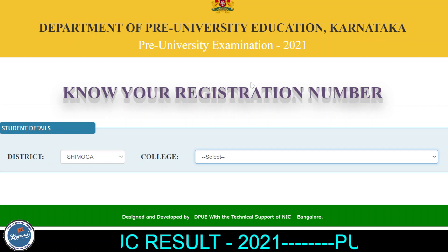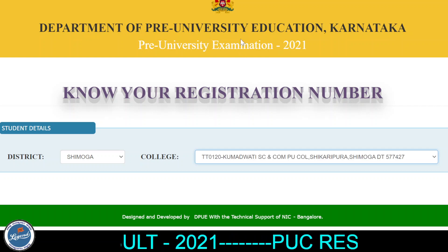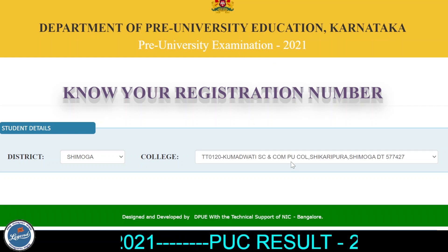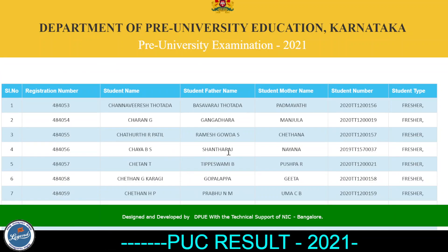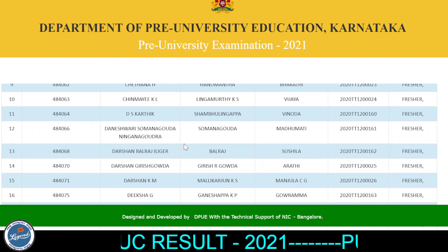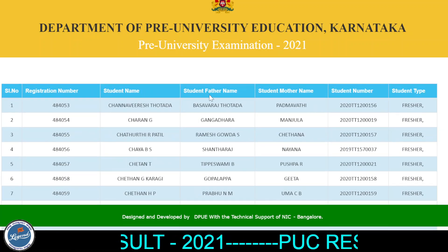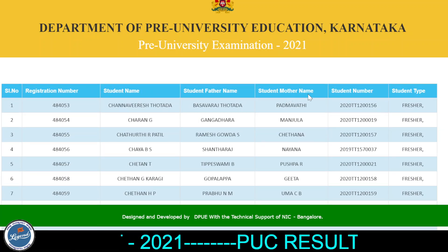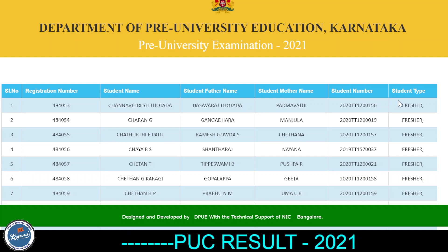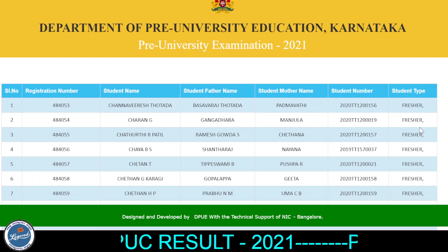For example, if you click on the list of colleges, you can see the details including student name, student father name, student mother name, student number, and student type — fresher or repeater.